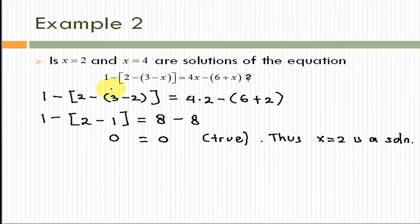How about x equal 4? Let's check it again. 1 minus, plug in x equal 4, 2 minus 3 minus 4 is negative 1. So 2 minus negative 1 equals, plug in x equal 4 there, we have 16. Plug in x equal 4 there, we have 6 plus 4 is 10. So 16 minus 10. Let's simplify more. 2 minus negative 1 is nothing but 2 plus 1. 16 minus 10 is 6. Of course, 1 minus 3 is not equal to 6 because 1 minus 3 is negative 2. This is a false statement.